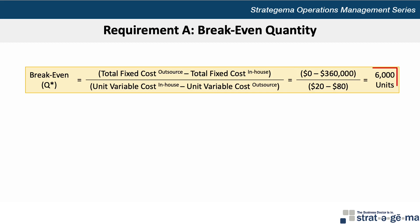The result is negative 360,000 divided by negative 60, which equals 6,000 units.